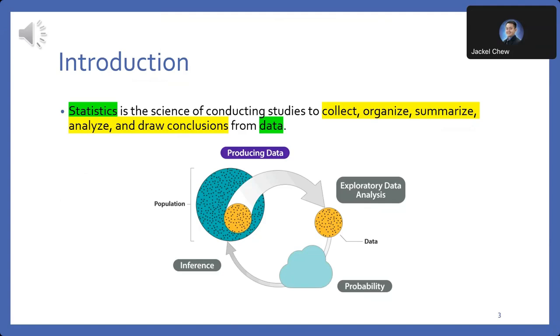In our world today, where we have a lot of information, statistics help us make sense of it. It helps us find important information, see patterns, and make smart choices in different areas like science, business, and more. By carefully looking at data, statistics helps us find trends, check if our ideas are right, and understand how sure we can be about our conclusions. It gives us the tools we need to solve tricky problems, guess what might happen in the future, and come up with new ideas.